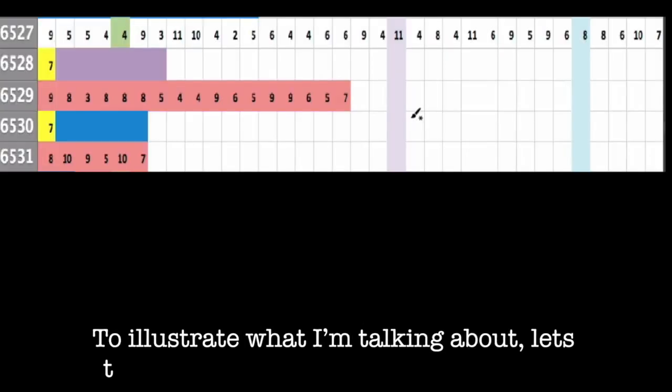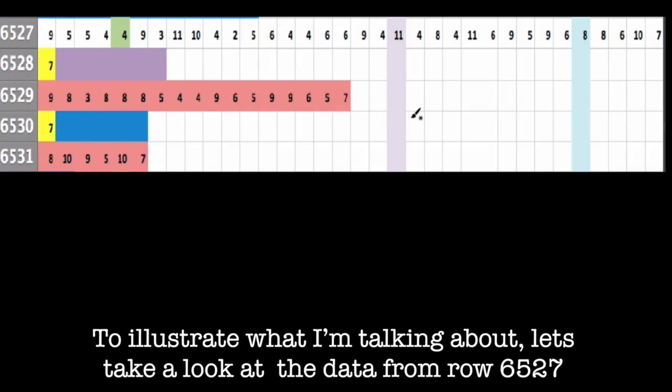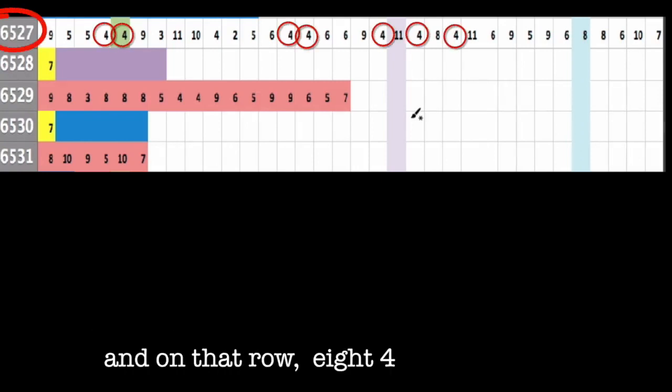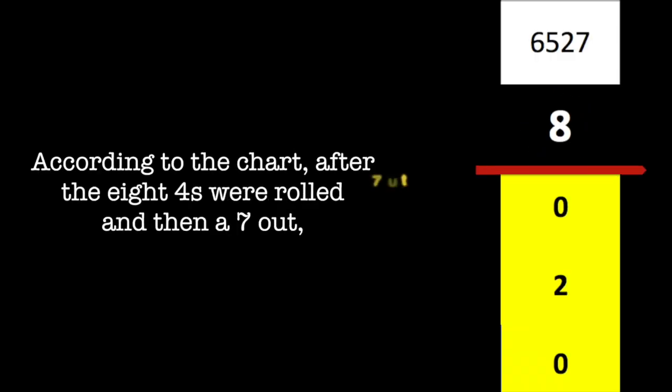To illustrate what I'm talking about, let's take the data from row 6527, and on that row, eight fours were rolled. According to the chart, after the eight fours were rolled and then a seven out, no fours were rolled before the next seven.